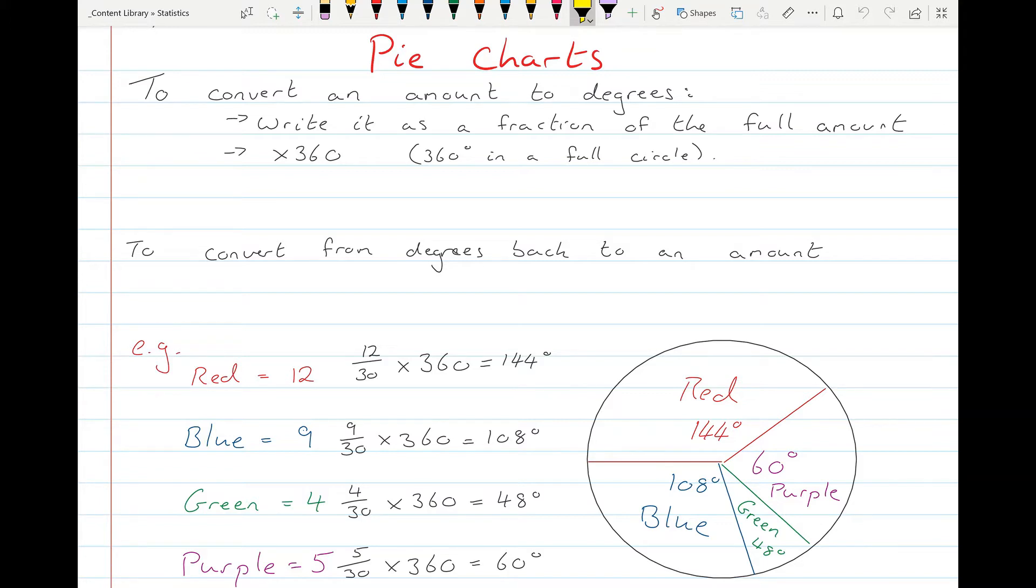To convert an amount to degrees to be used in the pie chart, you first write it as a fraction of the full amount and then multiply it by 360, because there's 360 degrees in the full circle. It's a very similar operation to finding a percentage. If you want to find a percentage of an amount, you will write it as a fraction and multiply it by 100, because there's 100% in the full amount. We're doing the same thing here, just multiplying it by 360.